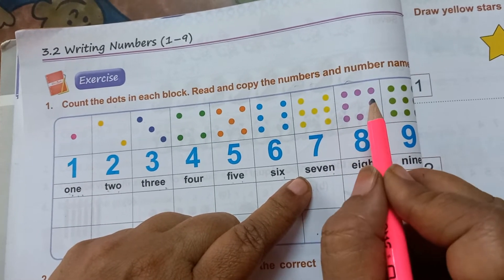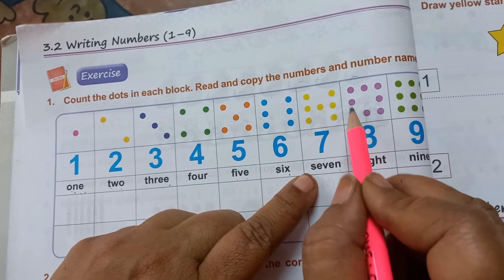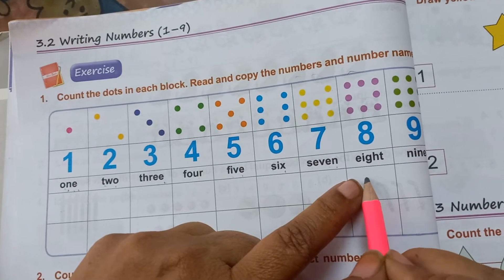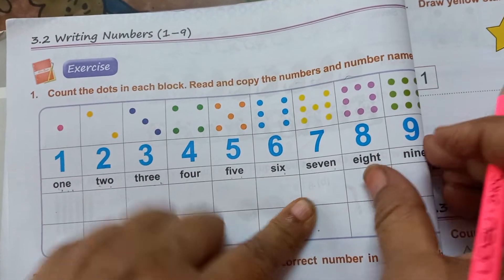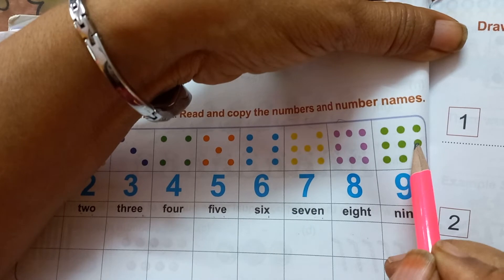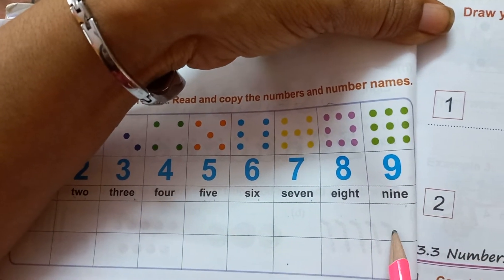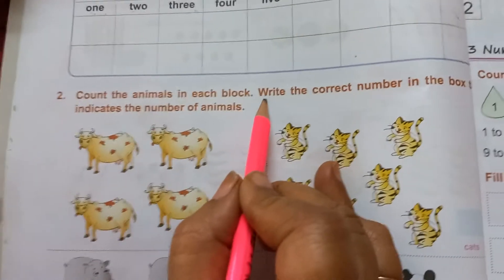One, 2, 3, 4, 5, 6, 7, 8. So E, I, G, H, T, eight. And then 1, 2, 3, 4, 5, 6, 7, 8, 9. N, I, N, E, nine. Then count the animals in each block.